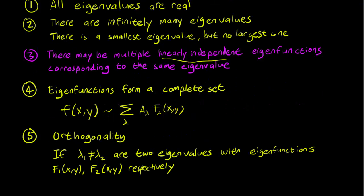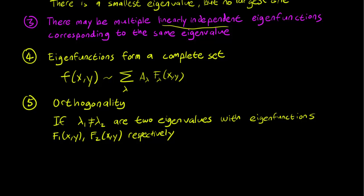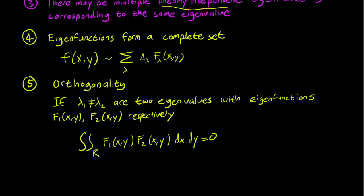The next property is also familiar. We have orthogonality of the eigenfunctions. If lambda 1 and lambda 2 are two eigenvalues, with eigenfunctions f1 and f2, then when you take the double integral of f1 times f2 across the entire region, you get zero. So this is what it means to say that the eigenfunctions are orthogonal.